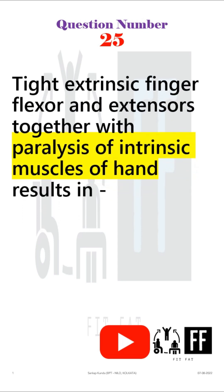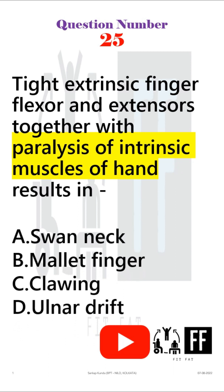Question number 25. Tight extrinsic finger flexor and extensor together with paralysis of intrinsic muscles of hand results in — and the options are these. In this question the main part is the paralysis of intrinsic muscles of hand. So whatever nerve supplies the intrinsic muscles, damage to that nerve will cause the paralysis and that will create the deformity.